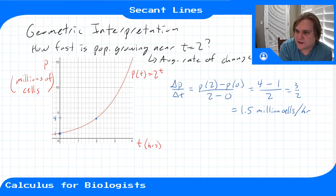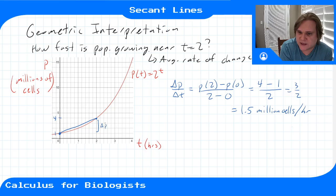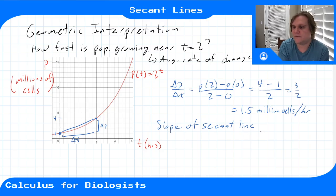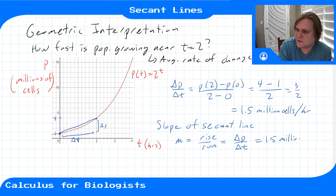What we computed — the change in population divided by the change in time — is equivalent to connecting these two points with a secant line and computing its slope. The slope is change in p over change in time, rise over run. The secant line is a line that connects two points along the same curve. So m equals delta p over delta t, which I just computed as 1.5 million cells per hour.